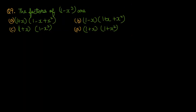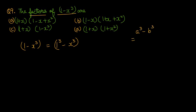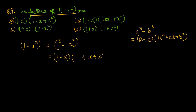Question number 9: the factors of 1 minus x cube are. हम 1 को 1³ लिख सकते हैं, तो यह बन गया 1³ - x³। a³ - b³ का formula है: (a - b)(a² + ab + b²)। तो यहाँ बन जाएगा (1 - x)(1 + x + x²)। So option number B is the right one.